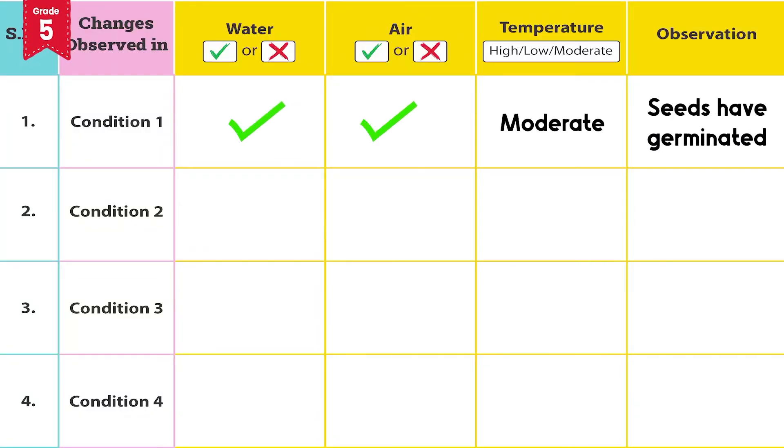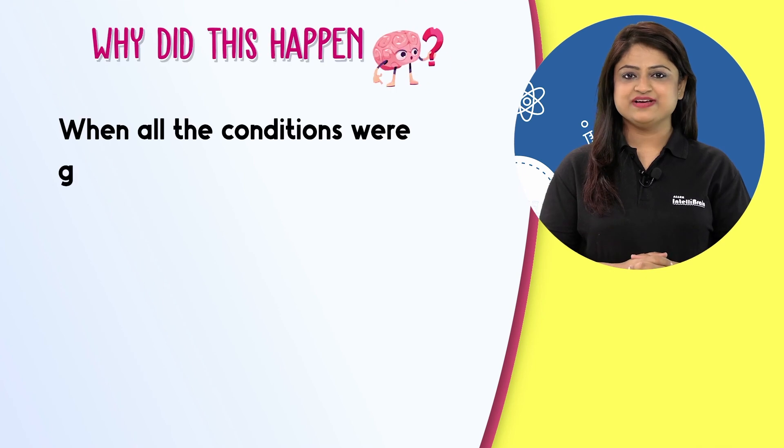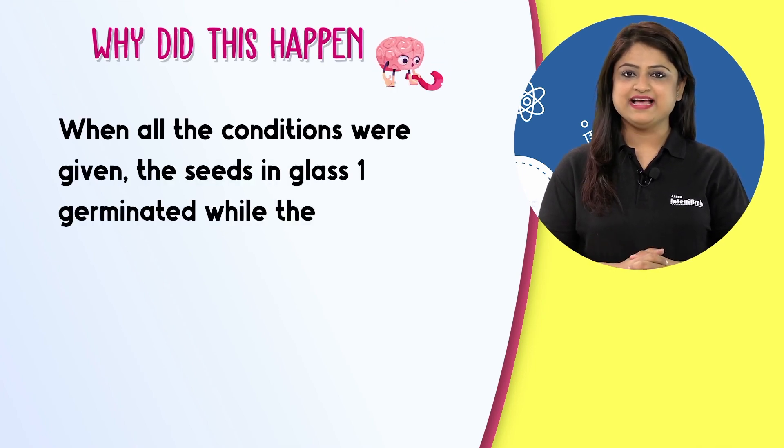Glass 1 has received all the conditions required for seed germination. That is, air, water and moderate temperature. While glass 2 has got excess water, glass 3 has got high temperature and no water, and glass 4 has not got water and appropriate temperature. When all the conditions were given, the seeds in glass 1 germinated while the others didn't.